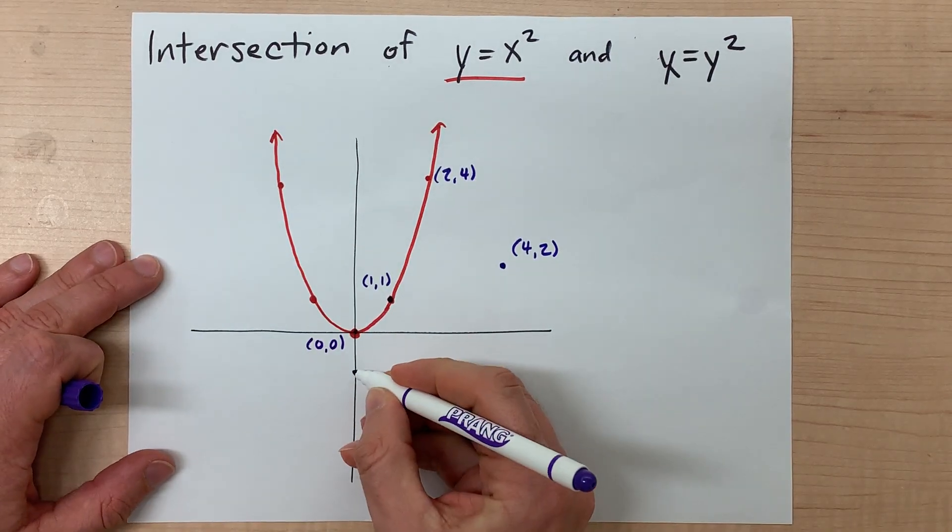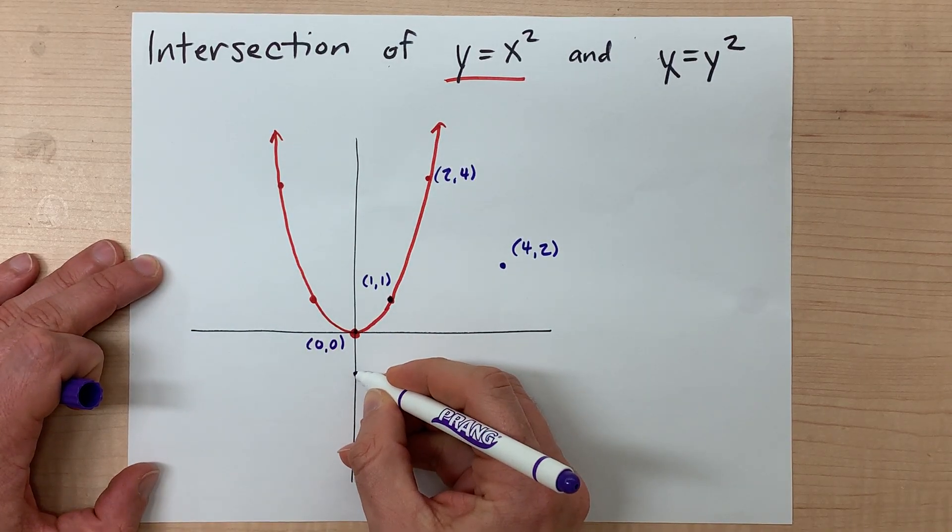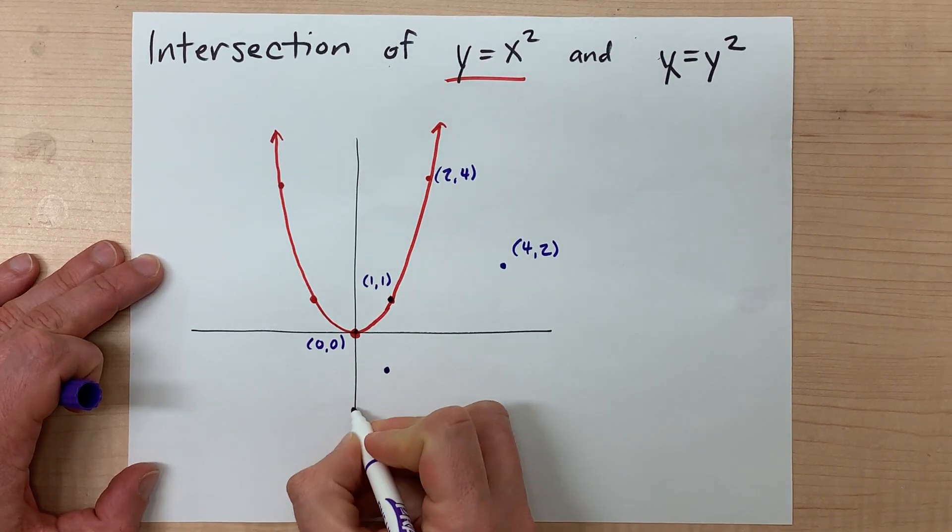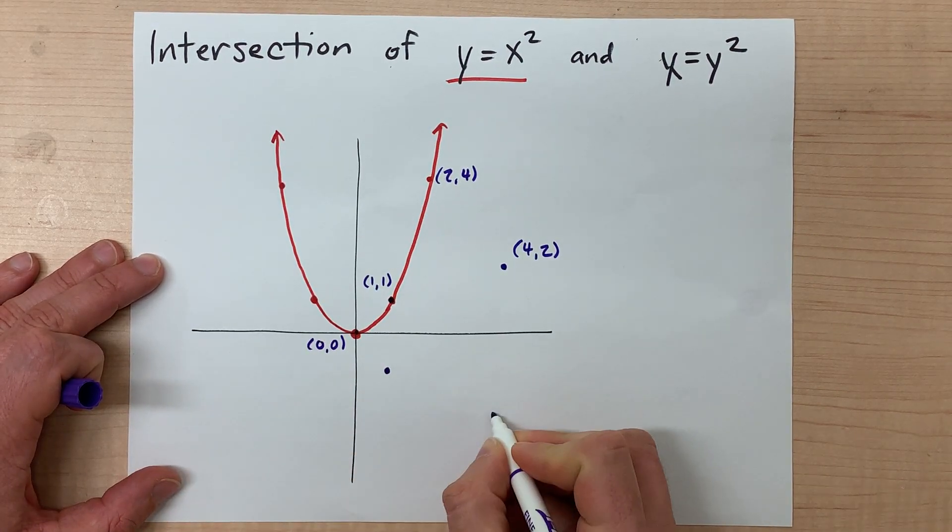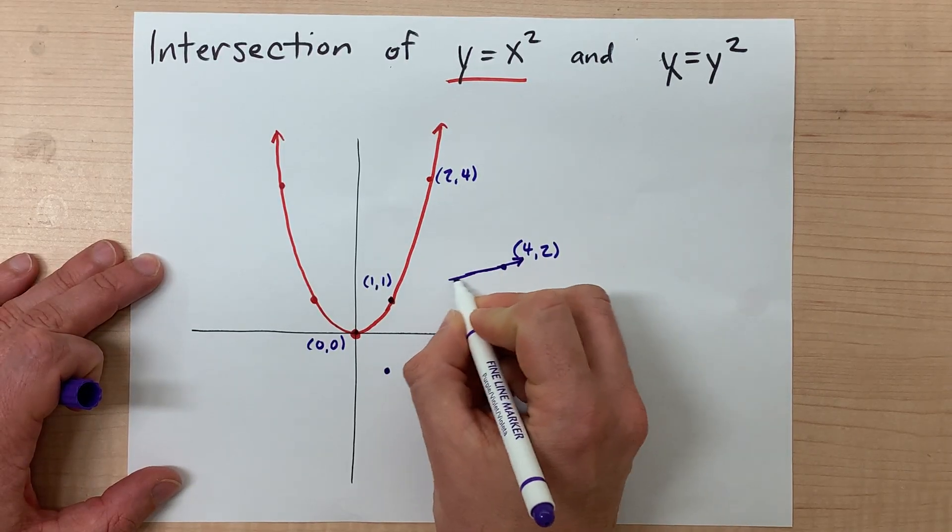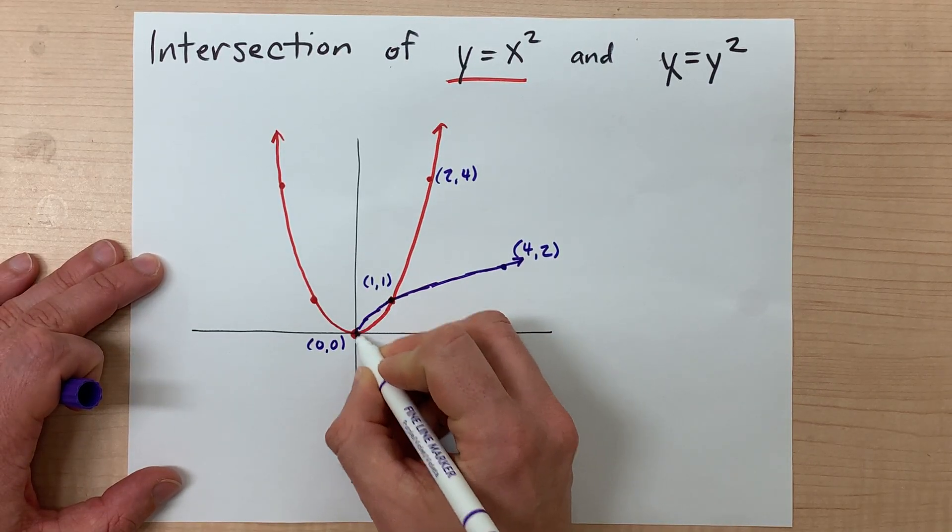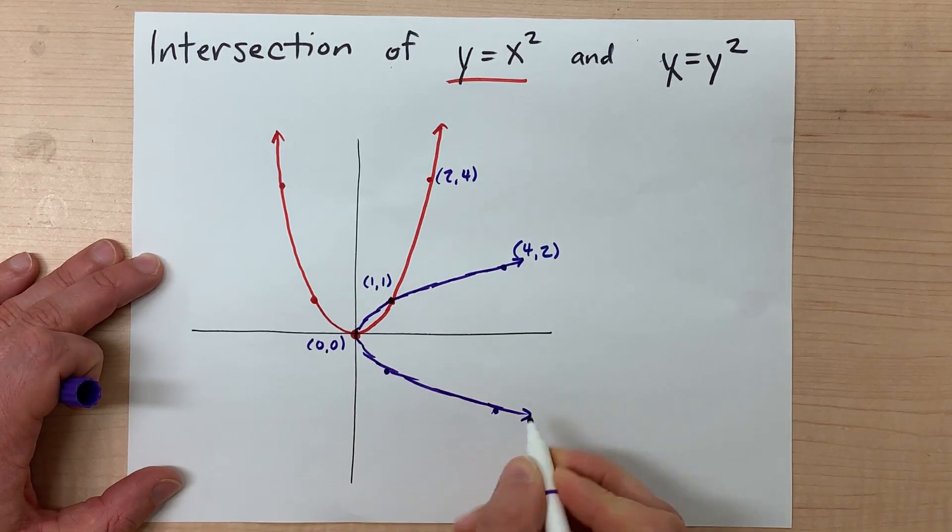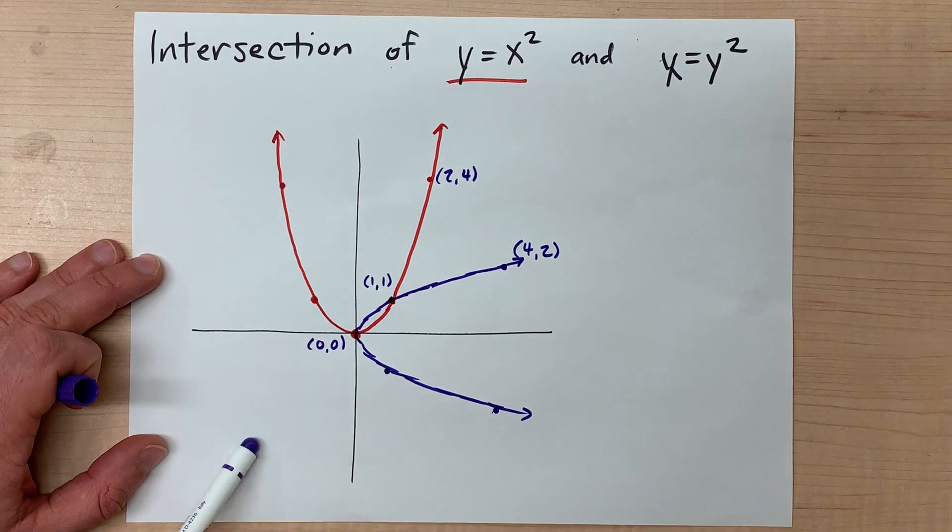Now a y of -1 would get squared to give you an x coordinate of positive 1, and a y of -2 would be squared to give you 4. Take a look at these purple points here. You'll note that this is a parabola on its side because it's been reflected along the diagonal y = x.